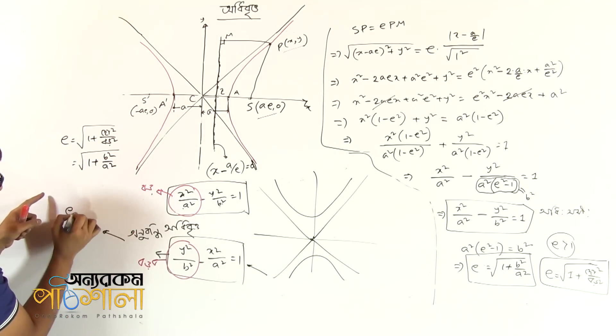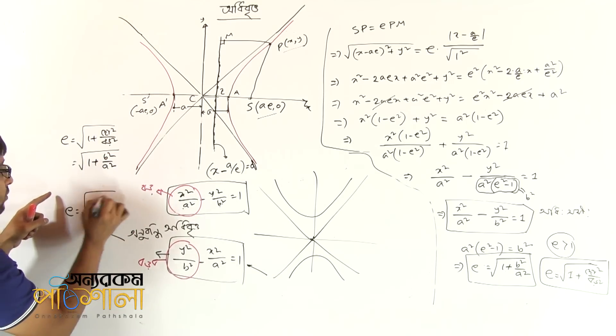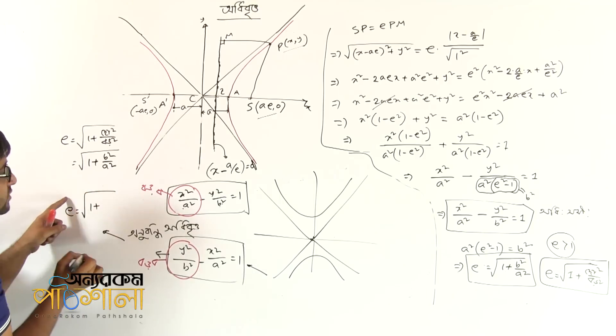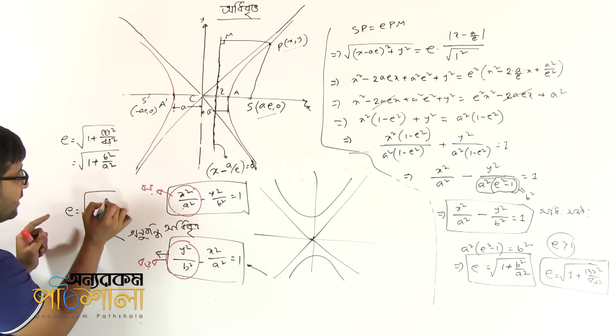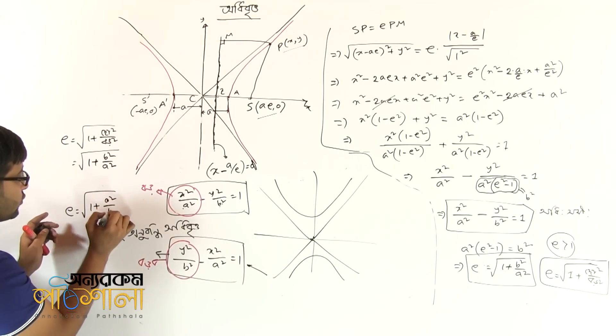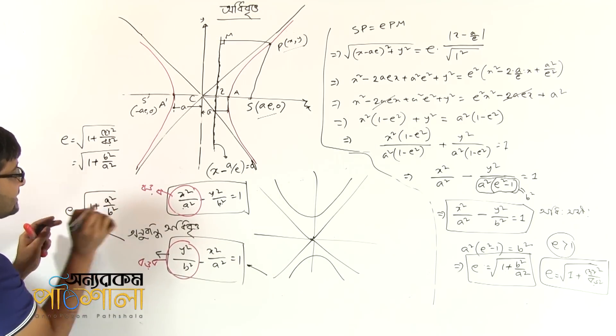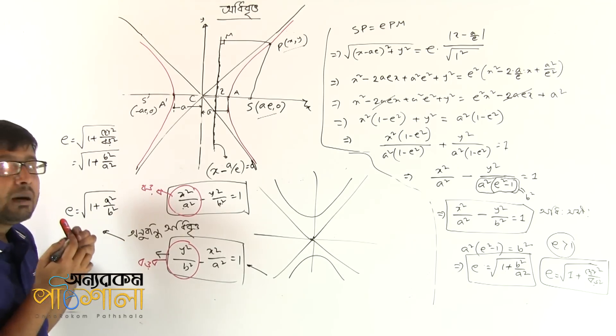Conjugate hyperbola eccentricity equals to root of 1 plus a squared by b squared. So it's equal to eta — a squared by b squared zeta. I mean, select the same thing. I will find the same thing.